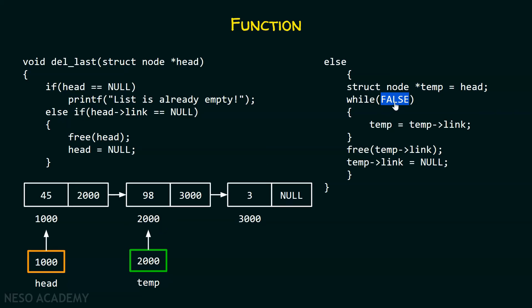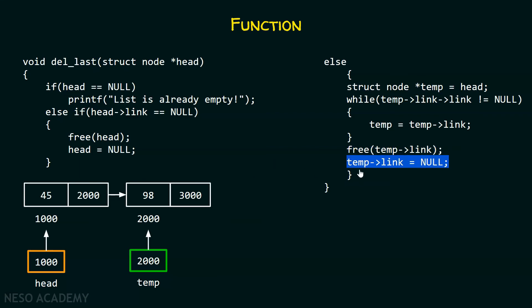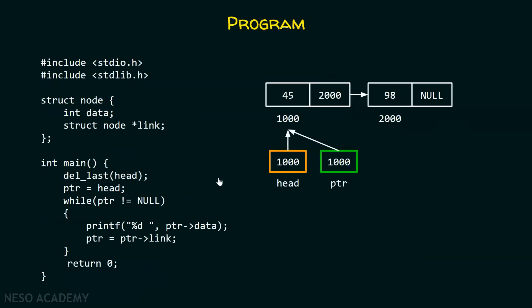As the condition is not satisfied, we get outside of the while loop. Here you can see we have the free function, and we are passing temp->link to it, which means we are passing the address 3000 to it. After this line of code, this particular node will get deleted from the list. And then the link part of this node will get updated by null. The changes will get reflected in the main function, and here I have created another pointer ptr which is pointing to the first node of the list.